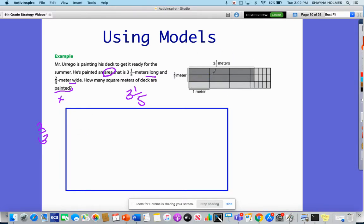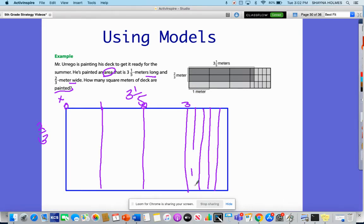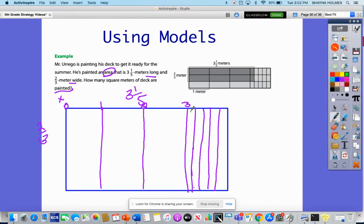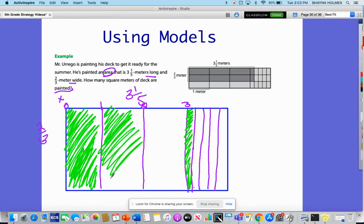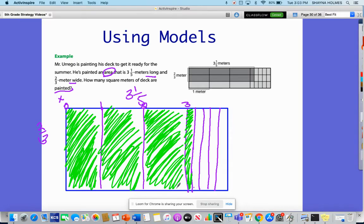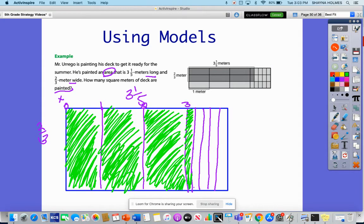I'm going to draw this model right here. I'm going to divide this into four sections. This is zero, one, two, three, and then I'm going to divide this as best I can into fifths. So he's painted, I'm going to represent 3⅕ here.